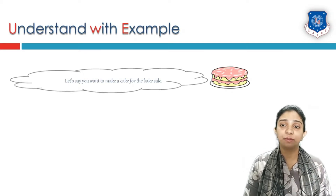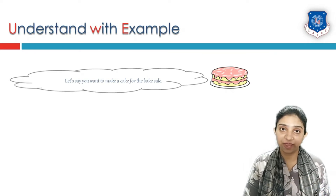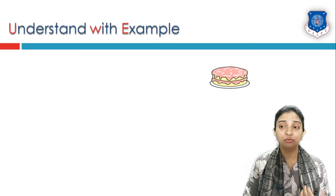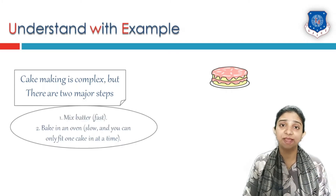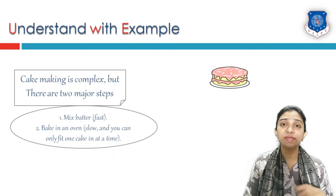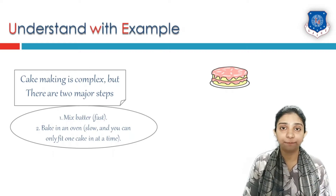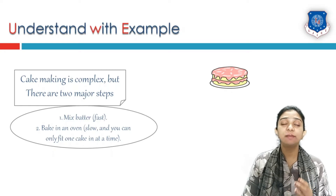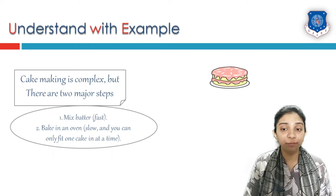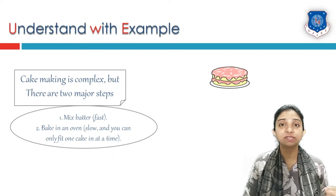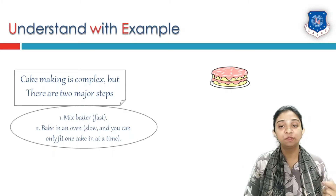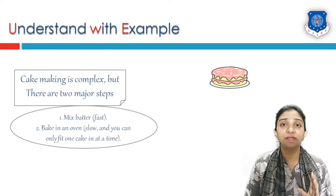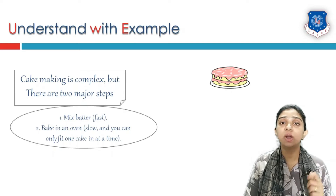Let us understand with an example. Let's say you want to bake a cake for a bake sale or a baking competition. To bake a cake, there are two major steps. The first step is to mix the batter of the cake, and the second step is to put the cake in an oven for baking. Mixing is a fast process, and baking is a slow process. You have only one oven which can fit only one cake at a time.